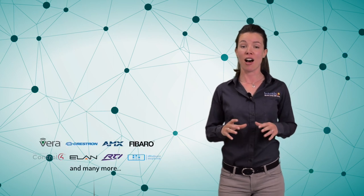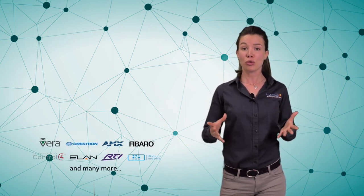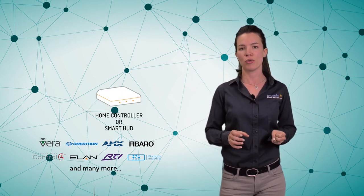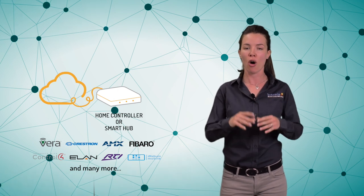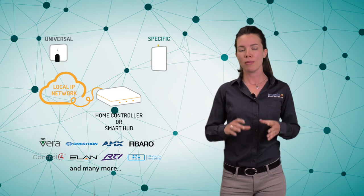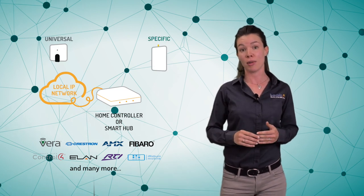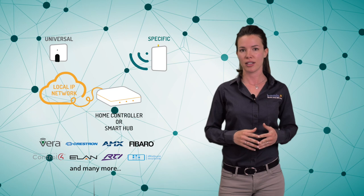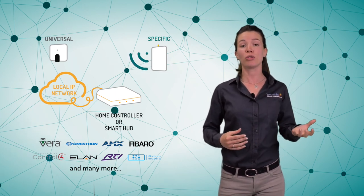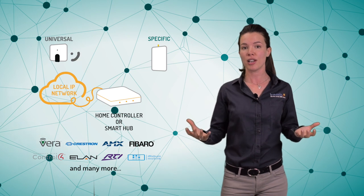As I mentioned the home automation system must have an IP connection. Usually this system has a smart hub or a central controller which will be connected to the home local IP network. Intesys Box device will be connected to the same network via Wi-Fi. In this way the communication between the home automation system and the gateway is established.